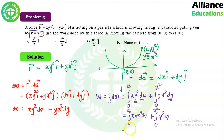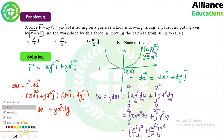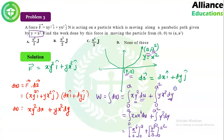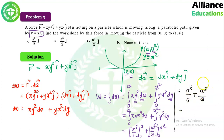Integrating: [x⁶/6]₀ᵃ + [y³/3]₀^(a²) = a⁶/6 + (a²)³/3 = a⁶/6 + a⁶/3. Making the denominators equal: a⁶/6 + 2a⁶/6 = 3a⁶/6 = a⁶/2. So the answer is a⁶/2 and option A is correct.